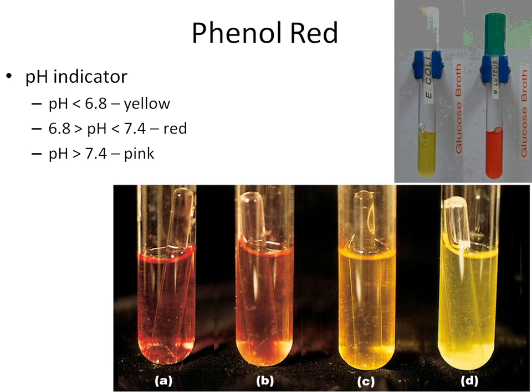In the phenol red broth, we add some sort of sugar. The example on this page is glucose, but we actually add glucose, sucrose, fructose, lactose, and lots of different sugars. The key is we only add one sugar at a time, so we're testing to see whether the bacteria can use the specific sugar that's there.